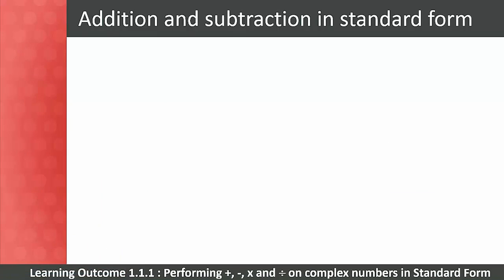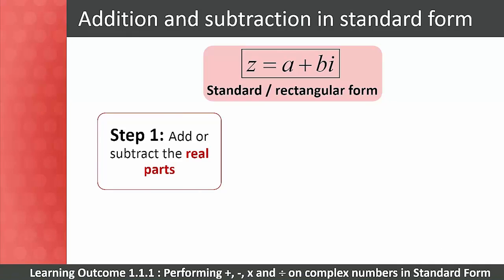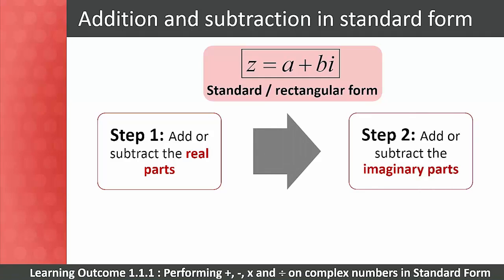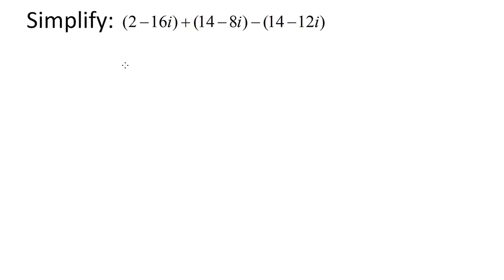Let's now revise addition and subtraction in standard form. Remember that the standard form of complex numbers is represented as z = a + bi. Your students should remember the procedures from Level 3. Step 1: add or subtract the real parts. Step 2: add or subtract the imaginary parts. Remember that the ordinary rules of algebra apply to imaginary numbers — for example, i + 4i = 5i, and 7i − 3i = 4i.